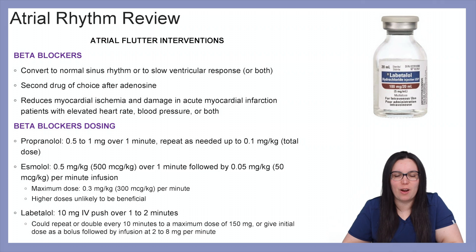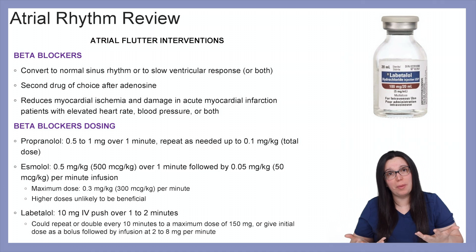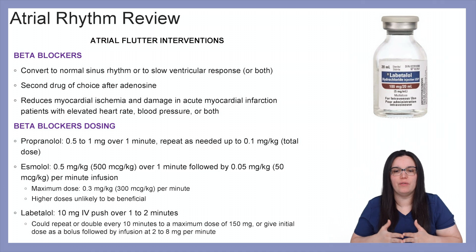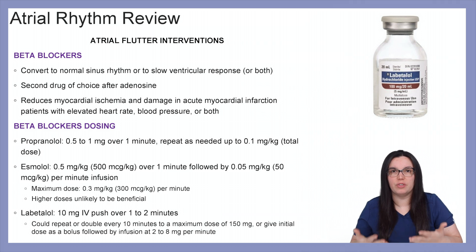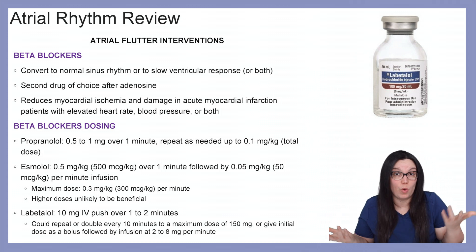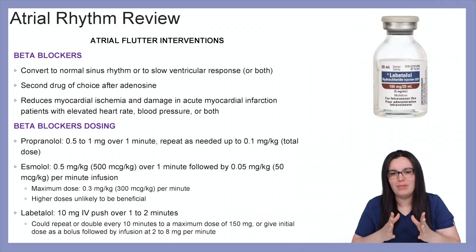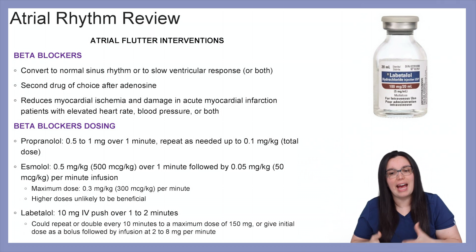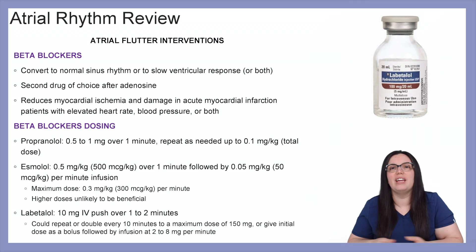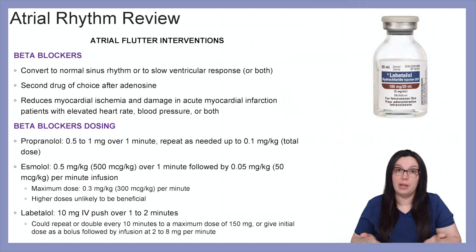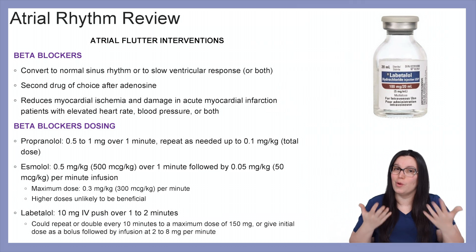Beta blockers can convert to normal sinus rhythm or slow the ventricular response, or both. It is a second drug of choice after adenosine, and it reduces myocardial ischemia and damage in acute myocardial infarction patients with elevated heart rates, blood pressure, or both.